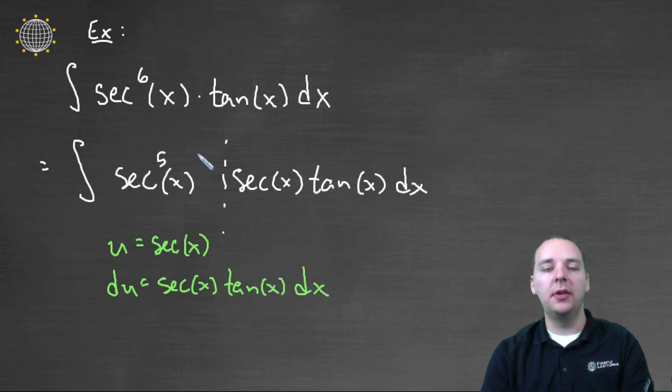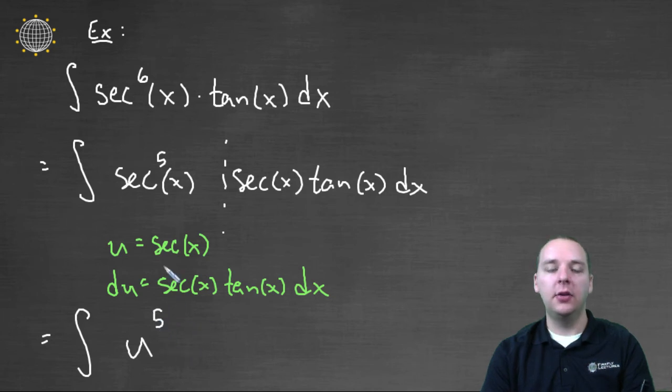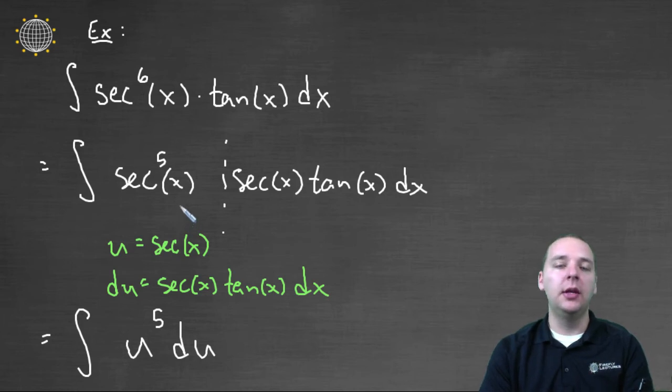So it works out perfectly. You have a function of u du. This would become the integral of u to the fifth du. So it's a u-substitution problem. The only tricky part is making a decision on what you want to save to put at the end of the integral.